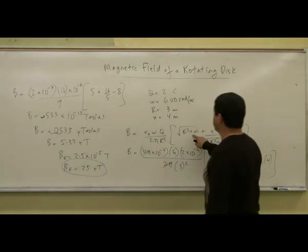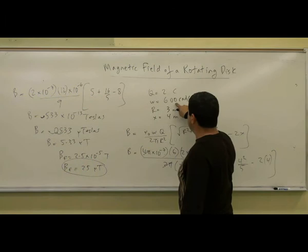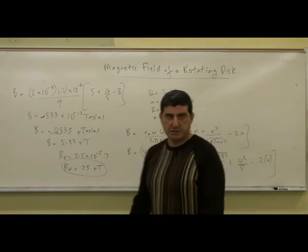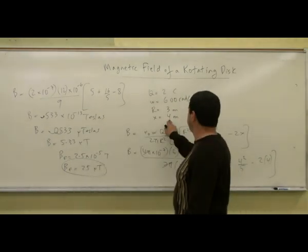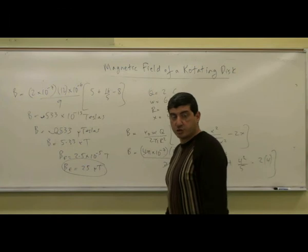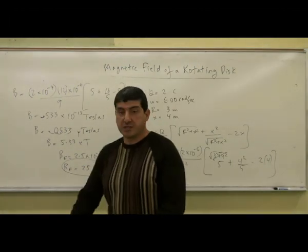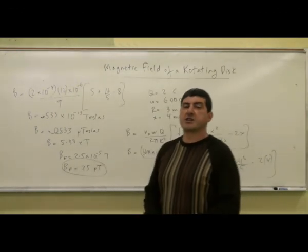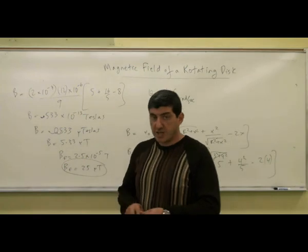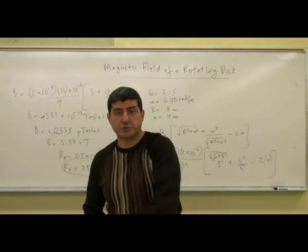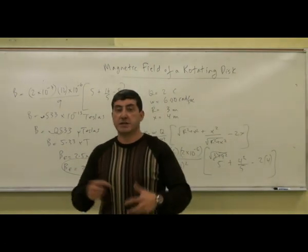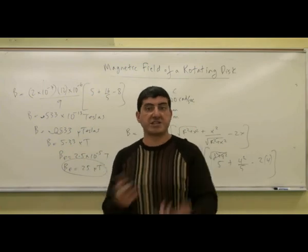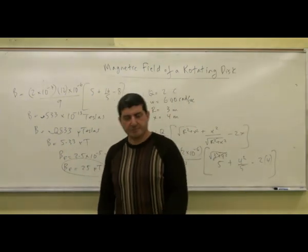So if I make the charge more, increase the spin rate, and get closer to the disk by making x even less, all of that will help the magnetic field get stronger and more noticeable. This is definitely something you could make, and you could even put a compass next to it and notice the effect. We used the result from our earlier integration to get the magnetic field of rotating disks, and you could also get the magnetic field of a rotating sphere and do other kinds of interesting problems. Thank you.